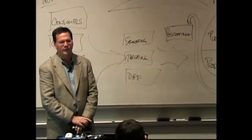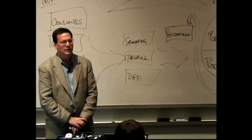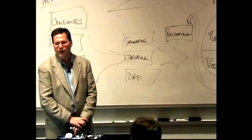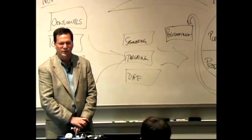So value is kind of this idea of benefits minus cost. How do you look at the benefits and costs that might exist for different alternatives and products?